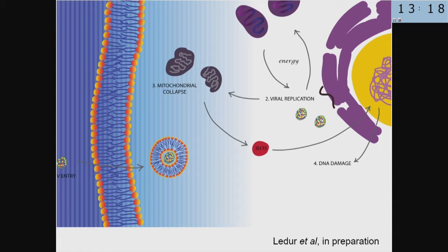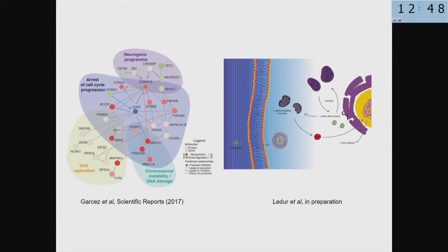To summarize this part: we believe the virus infects cells — mainly astrocytes — and begins to replicate inside the cell, probably in the endoplasmic reticulum. It then requires energy to replicate, damaging the mitochondria. ROS is released, goes to the DNA, and damages it. This is why the cell stops dividing and then dies. These are the two proposed pathways based on transcriptomics, proteomics, in silico analysis, and cell biology, describing how the virus behaves in human neural cells.